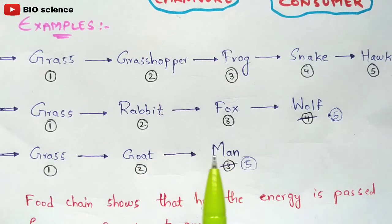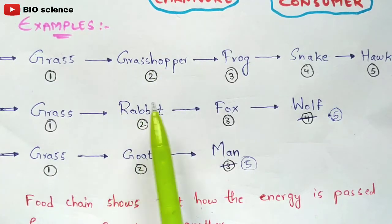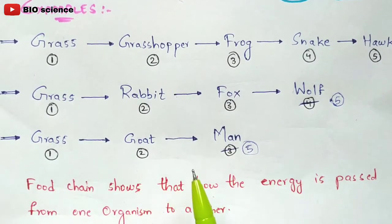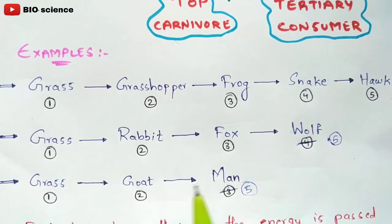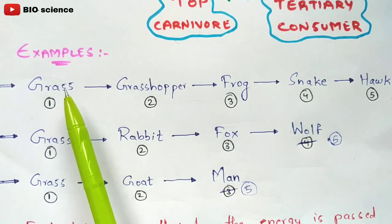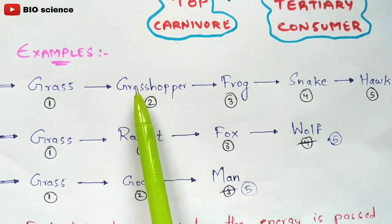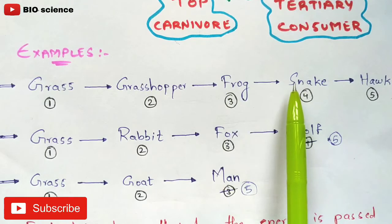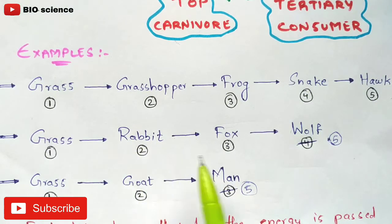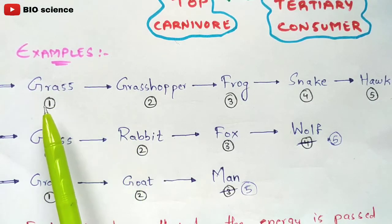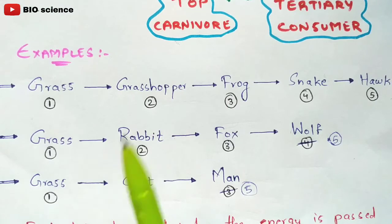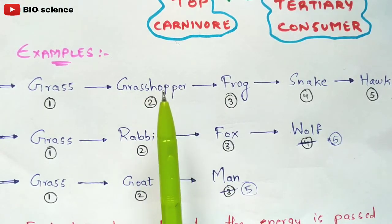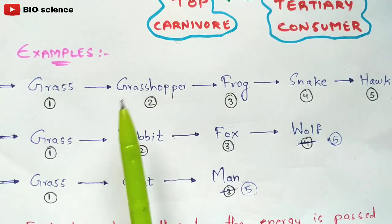These are the three examples showing this particular type of food chain. Now you have understood the concept of the food chain. One of the most important statements: food chains show how the energy is passed from one organism to another. Grass acts as a food energy source for the grasshopper, the grasshopper for the frog, the frog for the snake, and the snake for the hawk. The food energy source is passing from one organism to another organism in the food chain.